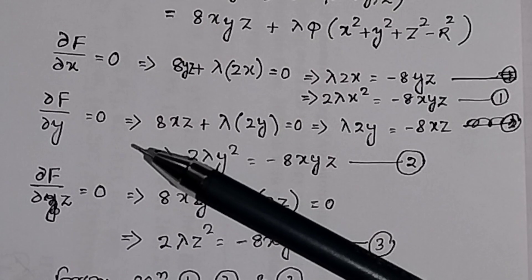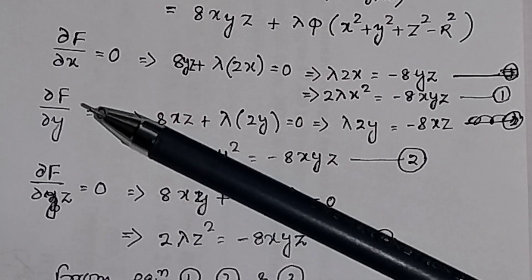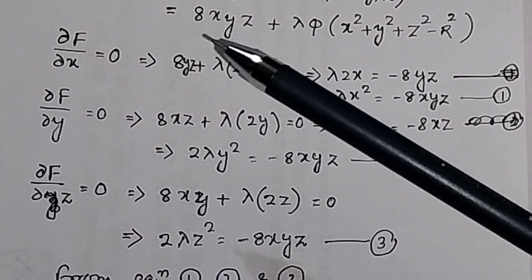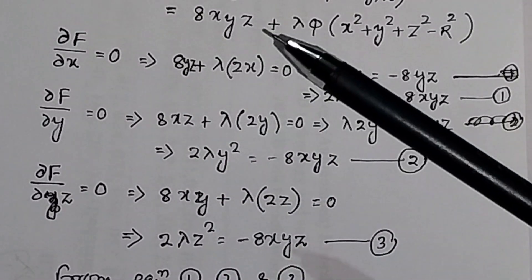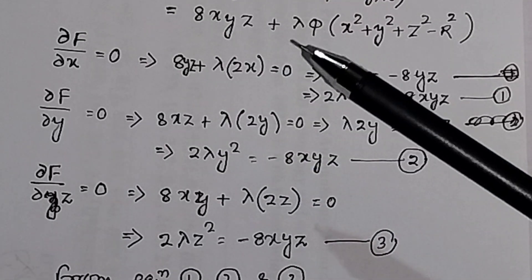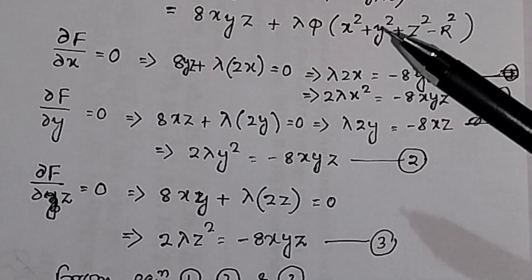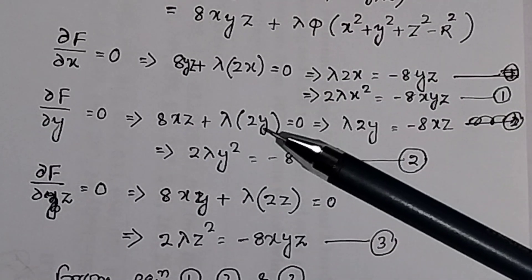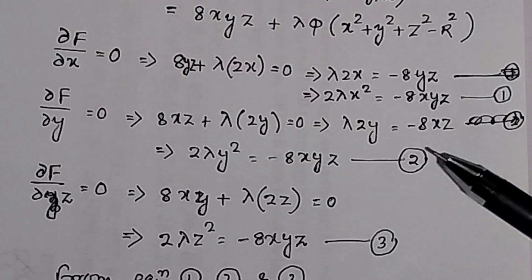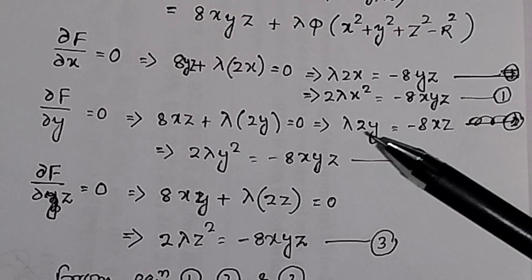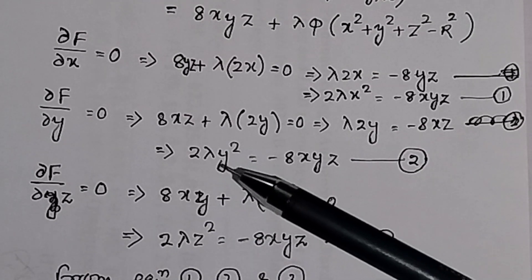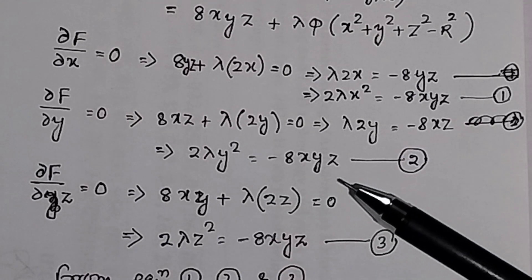Similarly, taking the partial derivative of F with respect to y, that is equal to 0. The partial derivative of 8xyz with respect to y is 8xz, and the partial derivative of y² is 2y, so 8xz + λ(2y) = 0. Multiplying both sides by y gives 2λy² = −8xyz. This is equation number 2.